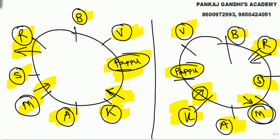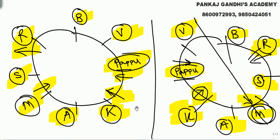Kunal and Pappu face in the same direction — agar Kunal idhar dekhega toh Pappu bhi udhar dekhega. Lekin problem — Ajay is second to the left of Pappu. Is case mein Ajay will come second to the right of Pappu — mujhe chahiye second to the left. Toh yeh case aayega jahan Ajay is second to the left of Pappu. Mera answer aa gaya. Yeh case scratch. Ab kitne log facing center — teen: Kunal, Pappu, Mahi.